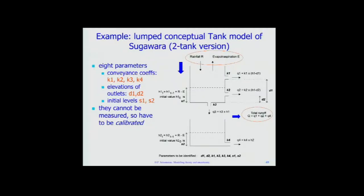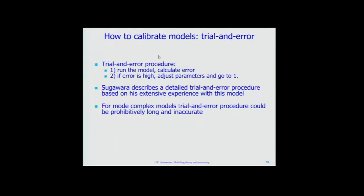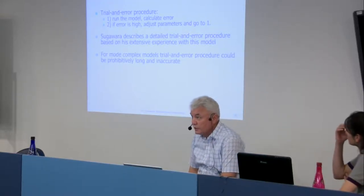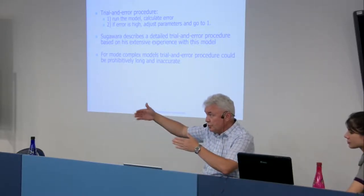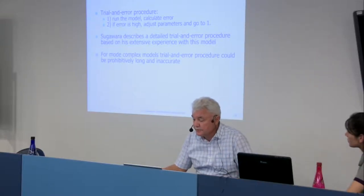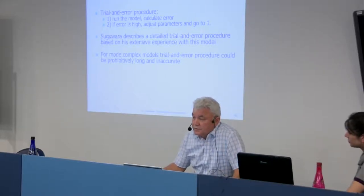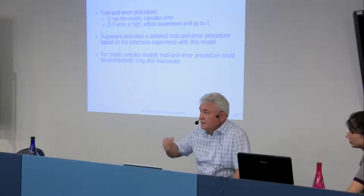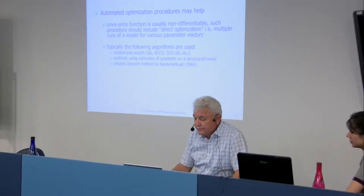The trial-and-error procedure is: run the model, calculate error, if error is high adjust parameters, go back to step one. Gavara described quite an efficient trial-and-error procedure for hydrologists in his 1960s and 70s papers, specifying in which order to change parameters. For complex models these manual procedures are too difficult, which is why we use automatic calibration routines. I will demonstrate a tool called GlobeUI later when we discuss optimization.